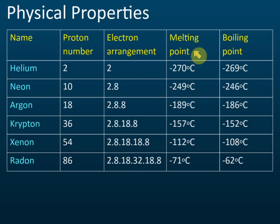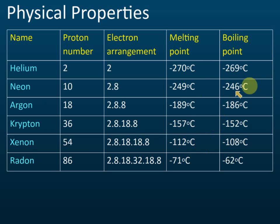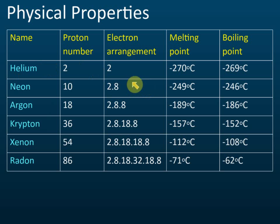Looking at melting points down the group from helium to radon, they increase — and boiling points also increase. Even radon, which has the highest melting and boiling points, still has values much lower than room temperature, meaning they are all gases at room temperature. You need to memorize the first four elements and the electron arrangements of the first three: 2; 2,8; 2,8,8.